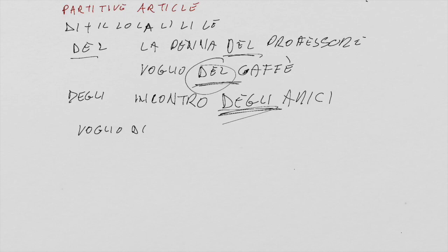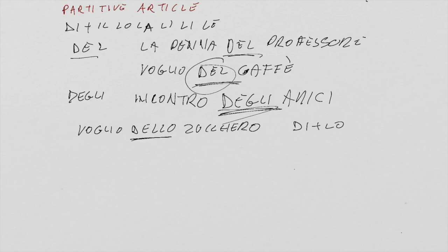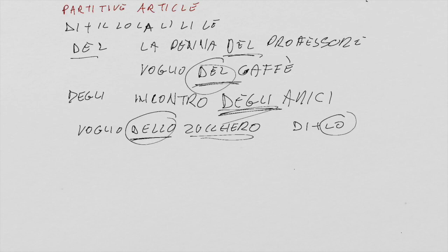For example: 'voglio dello zucchero' — I want some sugar. Why do you use 'dello'? Because you have DI plus LO. Zucchero starts with a Z, so the correct article in front of zucchero is LO, so DI plus LO results in 'dello.'